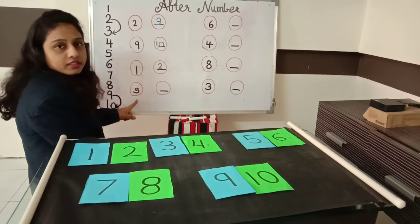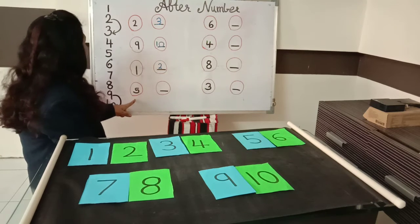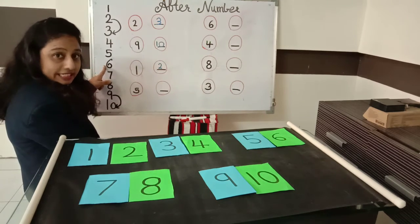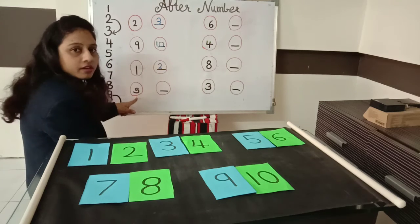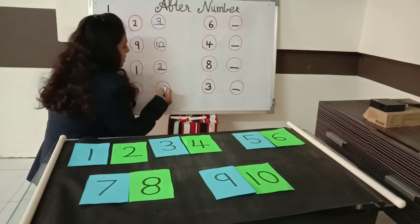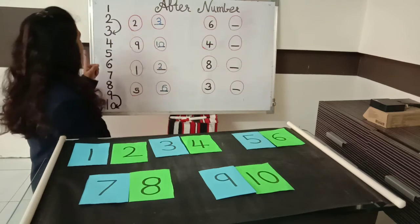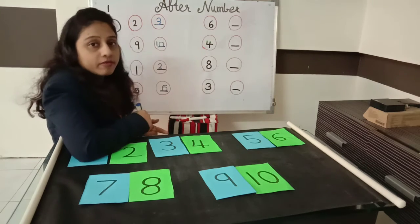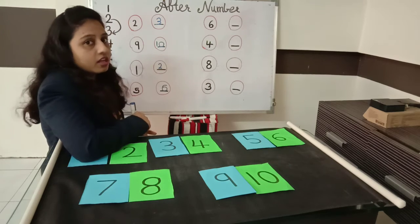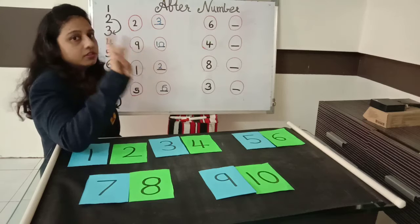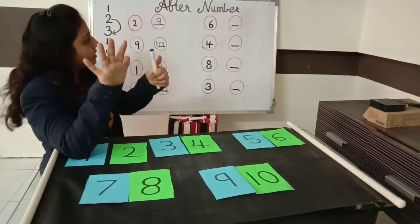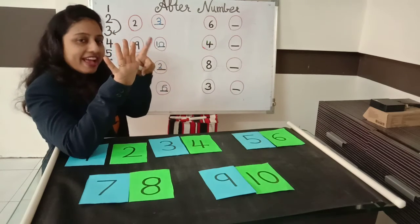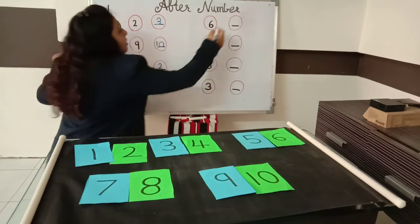Then which number is this? 5 number. What comes after 5? 6 number. So after number 5, what do we write? 6 number. Which number is this? 6 number. What comes after 6? Let's count: 1, 2, 3, 4, 5, 6 — what comes after 6? 7. So we will write here — 7.